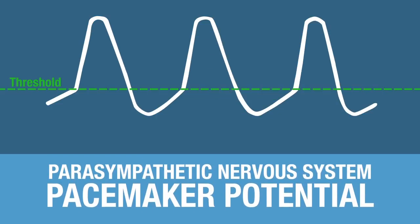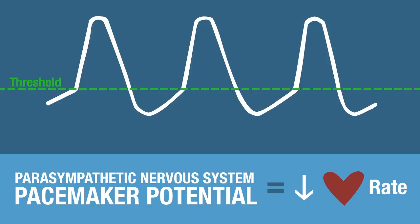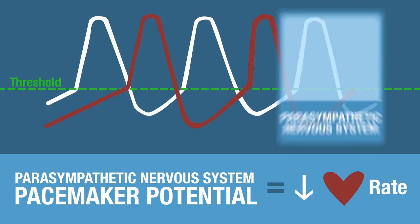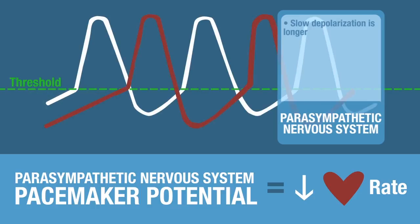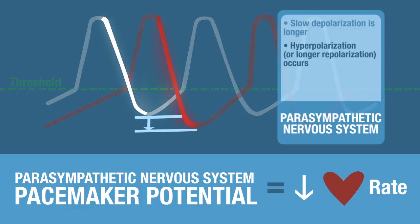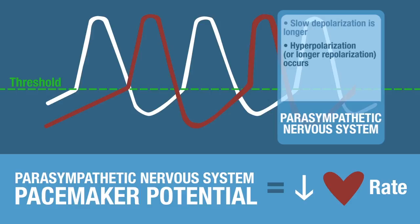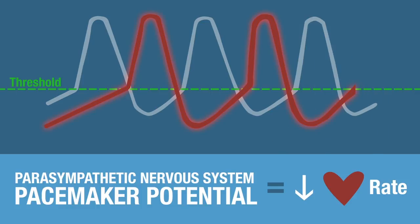Since we're dealing with the parasympathetic nervous system, we know that heart rate is going to go down. That means we need fewer, or decreased frequency of, these pacemaker potentials. The parasympathetic nervous system lowers heart rate by decreasing the frequency of pacemaker potentials — notice there are only two pacemaker potentials when the parasympathetic nervous system dominates.